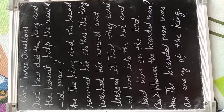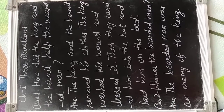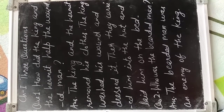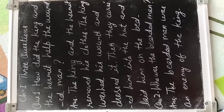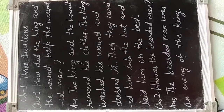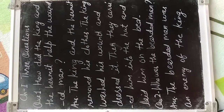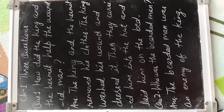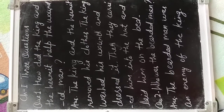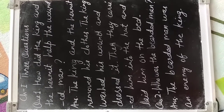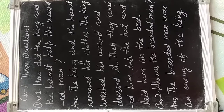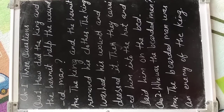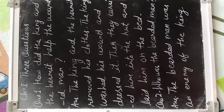Question number second: who was the bearded man? Dari wala vakti koon tha? The answer is: the bearded man was an enemy of the king. Dari wala vakti raja ka ek shatru tha.